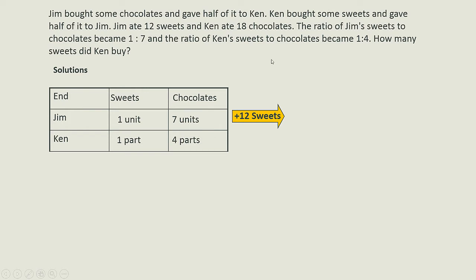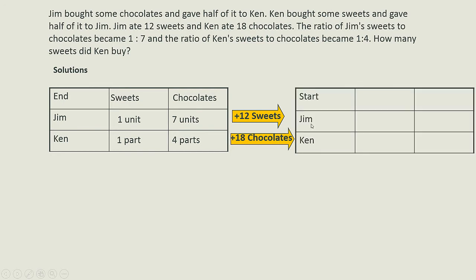Since Jim ate 12 sweets and I want to work backwards, I need to add back the 12 sweets he ate. So for Jim, sweets become 1 unit plus 12, and the chocolates stay the same at 7 units. For Ken, since he ate 18 chocolates, I need to add back the 18 chocolates. So Ken's sweets stay at 1 part, and chocolates become 4 parts plus 18.